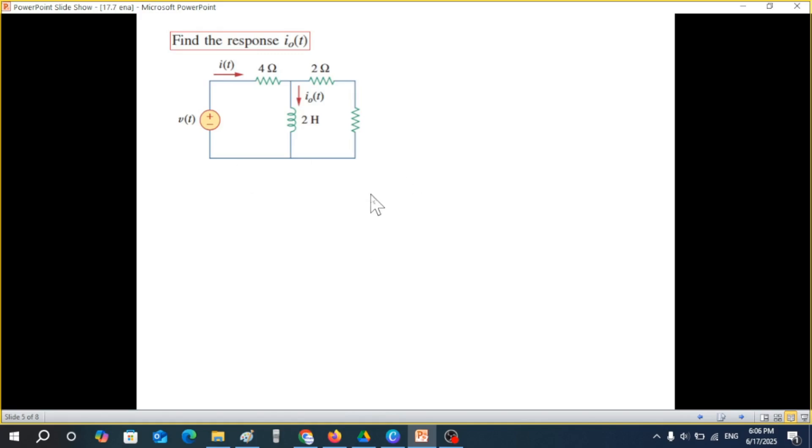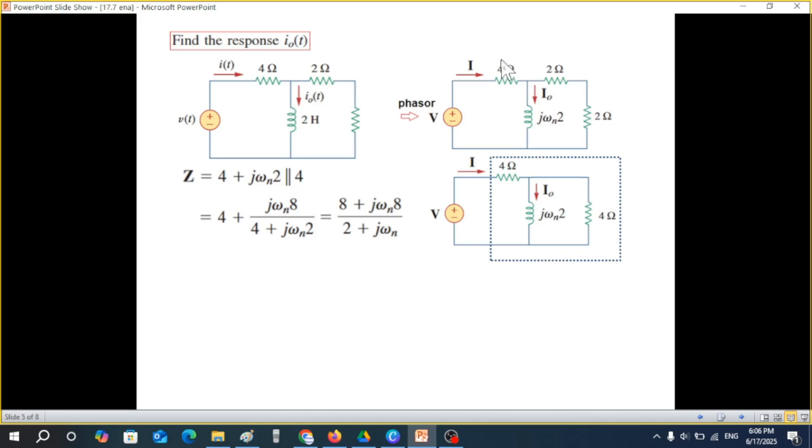Now we convert the circuit into phasor form. You know that inductor and the capacitors are changed in phasor form. So the only change will be this one with jωₙ and value 2Ω. Also we change the voltage into capital V and current into capital I. Now from here we can find the impedance total which is these two in parallel plus 4Ω. So we can write 4 + jωₙ·2 parallel 4Ω. When you solve this in parallel you get this value. Taking the LCM, multiply this by 4 and then adding this will be the final answer.